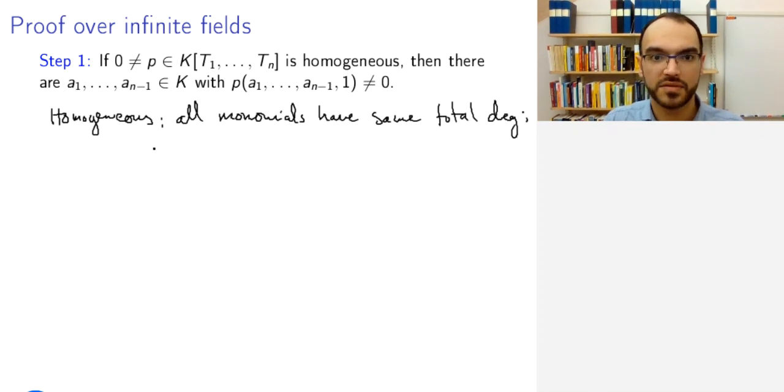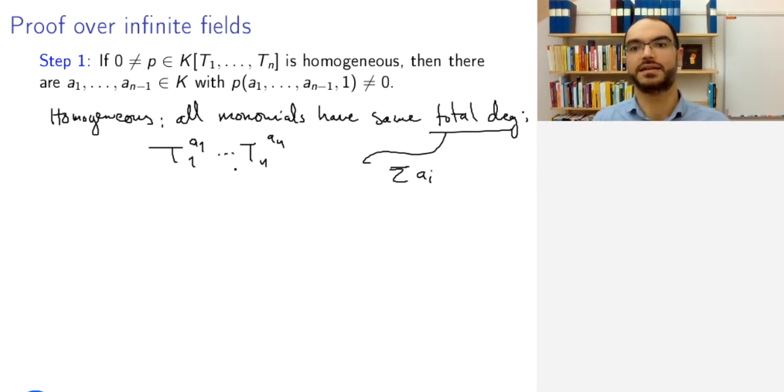Now, what this means, so if you have a monomial, it will be of the shape T1^A1 times up to Tn^An. And this total degree is the sum of these Ai. And so this you require is the same.